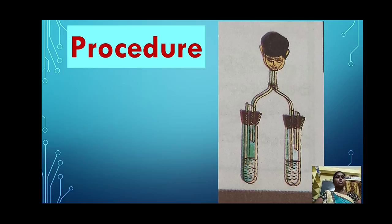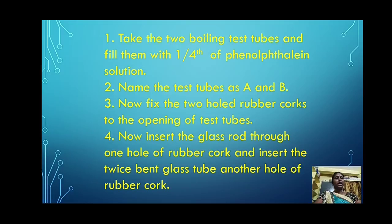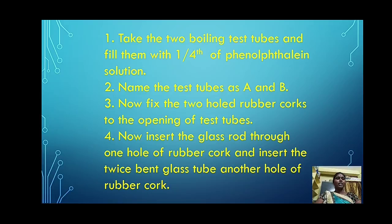Then we go to the procedure. Take two boiling test tubes and fill them with one fourth of phenolphthalein solution or lime water. Name the test tubes as A and B. Now fix the two hole rubber corks to the opening of each test tube. Insert the glass rod through one hole of the rubber corks, and the twice bent glass tube through the other hole. This is the apparatus needed for this activity.